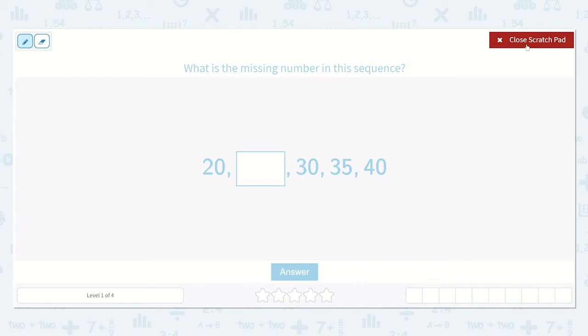I see 20, and then the missing number, 30, 35, 40. I hear us counting by fives here.